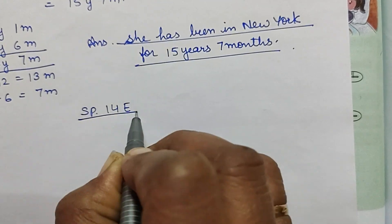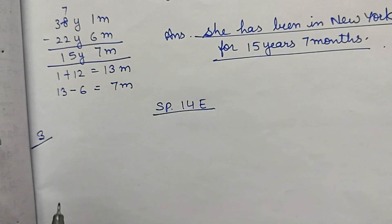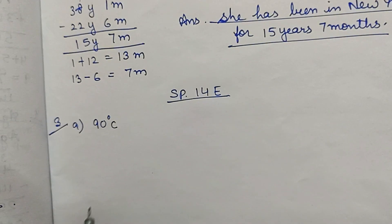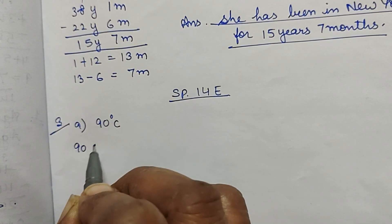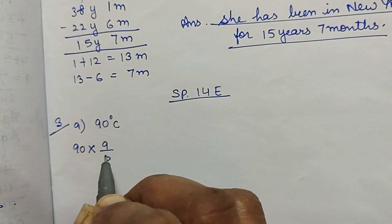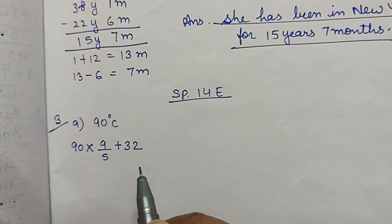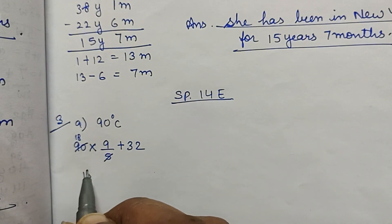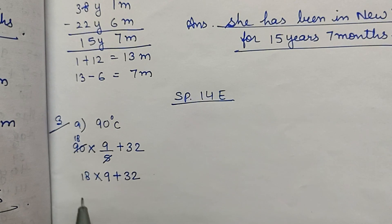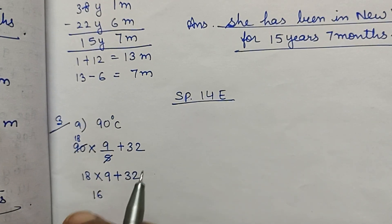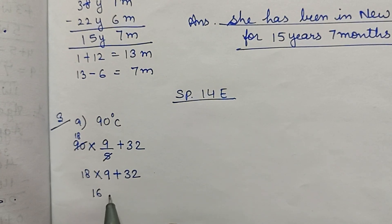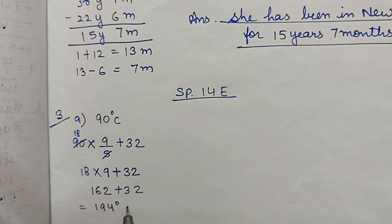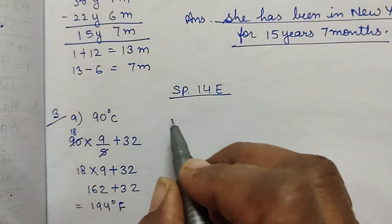Self-practice 14E, Question 3, part A: 90 degree Celsius. इसको change करना है Fahrenheit में। So 90 multiplied by 9/5 plus 32. 5 से reduce करेंगे तो आ जाएगा 18. Now 18 into 9 is 162. 162 plus 32 is equal to 194 degree Fahrenheit.